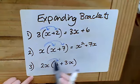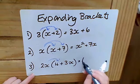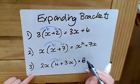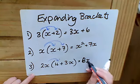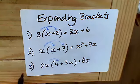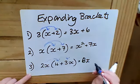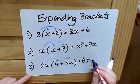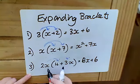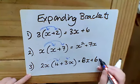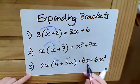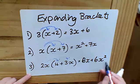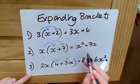The last example: two lots of x times four, so I can do two times four which gives me 8x. Then lastly, 2x times 3x — I can multiply the two and the three together, all positive, which gives me six, and then x times x gives me x squared.